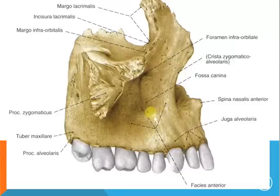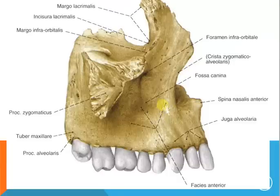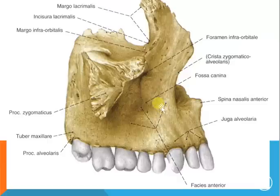This is the facies anterior of the maxilla, with the spina nasalis anterior shown here. Here we have the fossa canina, which is very important in medicine and especially in the dental field, because an infection of the fossa canina causes swelling of the face. It is treated with a root canal and antibiotics. This is the crista zygomatico-alveolaris, and the foramen infraorbitale is shown right here. Thank you.